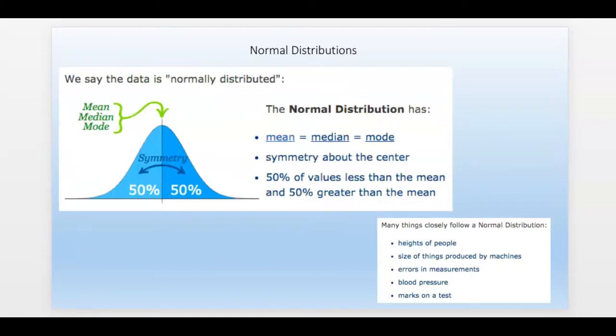In a normally distributed set of data, the mean, the median, and the mode are pretty much the same. It's symmetric about the center, so half of the values, 50% of the values are less than the mean, and 50% are greater than the mean. There are a lot of things in the real world that follow or closely follow a normal distribution. So we use normal distributions to approximate things, to estimate things a lot.